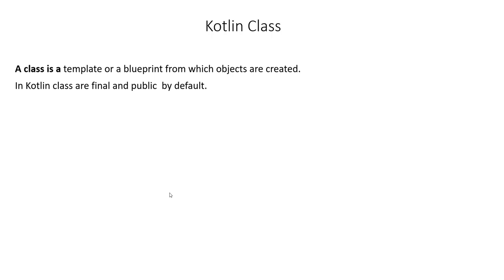A class is a template or blueprint from which objects are created. In Kotlin, classes are final and public by default. Don't worry about final and public — we'll be covering all of that in a later subject. Let's go and see this in a practical way and jump into our project.